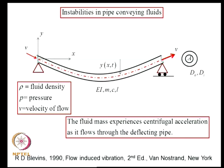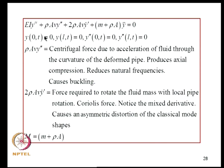Without getting into fluid mechanics arguments, the governing field equation is: EI·Y'''' + rho·A·V²·Y'' + 2·rho·A·V·Y-dot' + (M + rho·A)·Y-double-dot = 0, with simply-supported boundary conditions. EI is the flexural rigidity; M is mass per unit length of the beam; rho·A is mass per unit length of the fluid. The two new terms compared to the no-flow case are the centrifugal term rho·A·V²·Y'' and the Coriolis term 2·rho·A·V·Y-dot'.